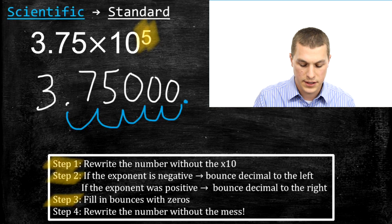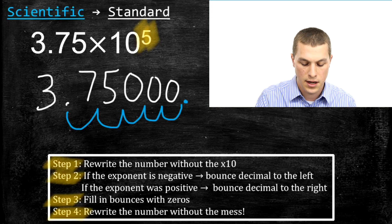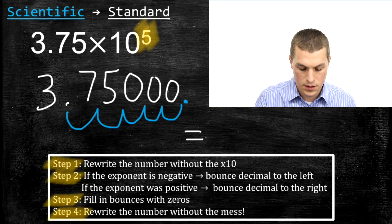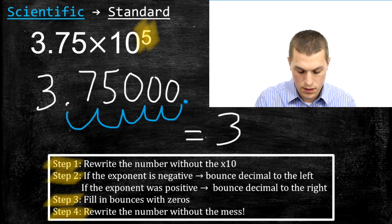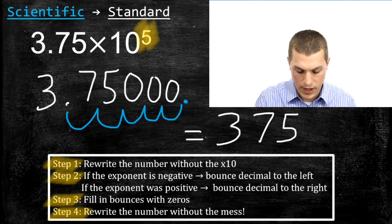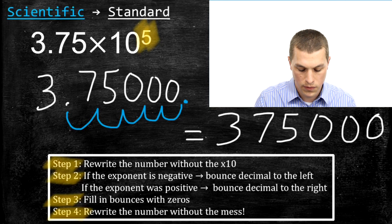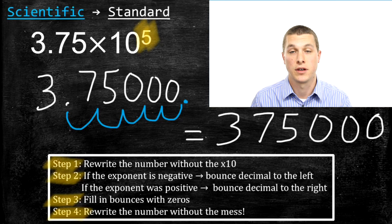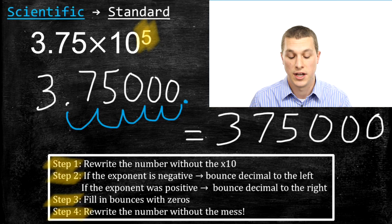We've now regenerated our number in standard notation, but it's a little messy because of all those bounces. So step four is we rewrite the number without all the mess. What we get is just 3, 7, 5 followed by three zeros.